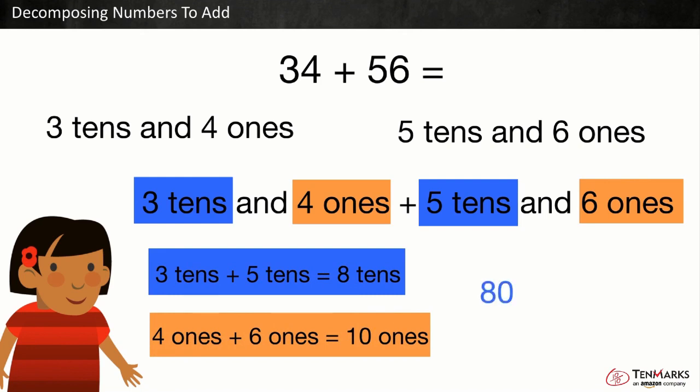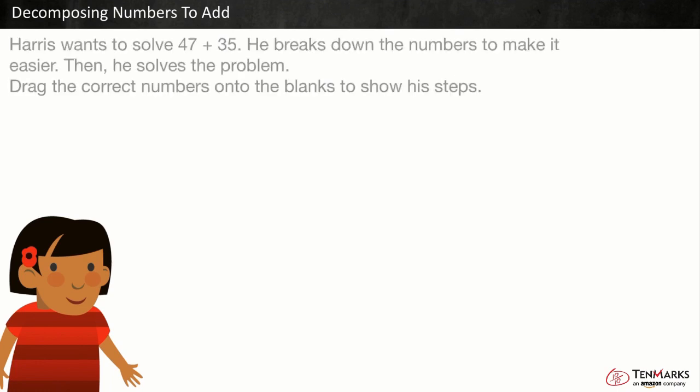Eight tens is the same as 80 so we can add 80 and 10 which equals 90. Let's look at another example.